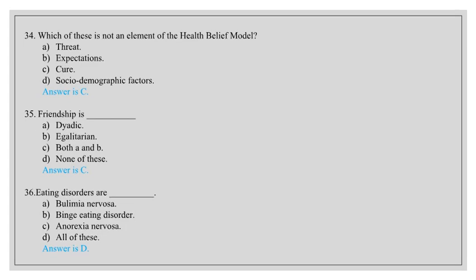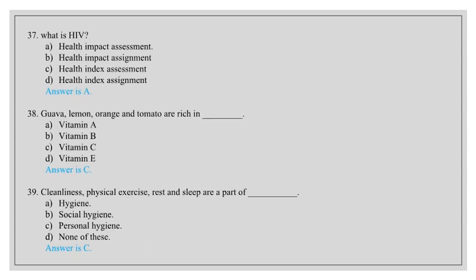Eating disorders are bulimia nervosa, binge eating disorder, anorexia nervosa, all of these. Answer is D, all of these. What is HIA? Health impact assessment, health impact assignment, health index assessment, health index assignment. Answer is A, health index assessment.